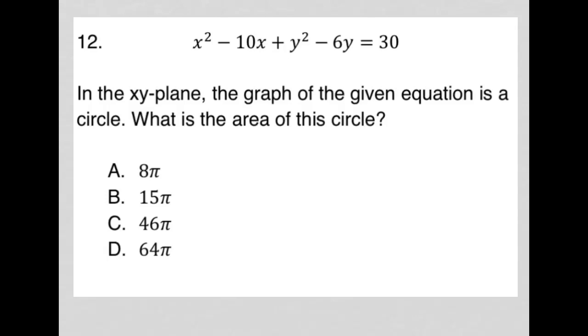This question starts off by providing us with this polynomial equation here. We have x squared minus 10x plus y squared minus 6y equals 30. This looks like it's going to be a setup for using complete the square for a circle equation.